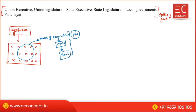Next is Local Government. Local government includes Panchayati Raj at the rural level and Municipalities at the urban level. Panchayati Raj institutions form the grassroots layer of governance in India.